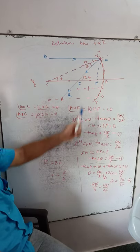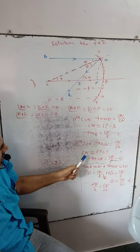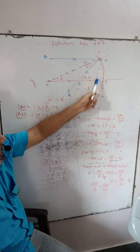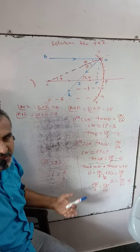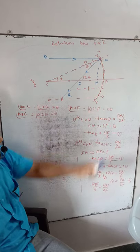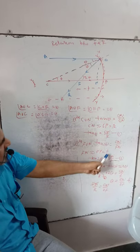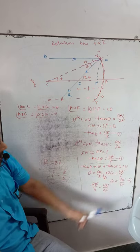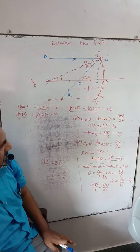Next, consider the right-angle triangle FON. The angle here is 2 theta. Applying the same trigonometric function: tan 2 theta equals opposite side ON divided by adjacent side FN. For the small aperture of the concave mirror, the distance between F, N, and P is negligibly small, so FN is approximately equal to FP, which equals small f — the focal length of the spherical mirror. Substituting: tan 2 theta equals ON divided by f. This is equation number 2.